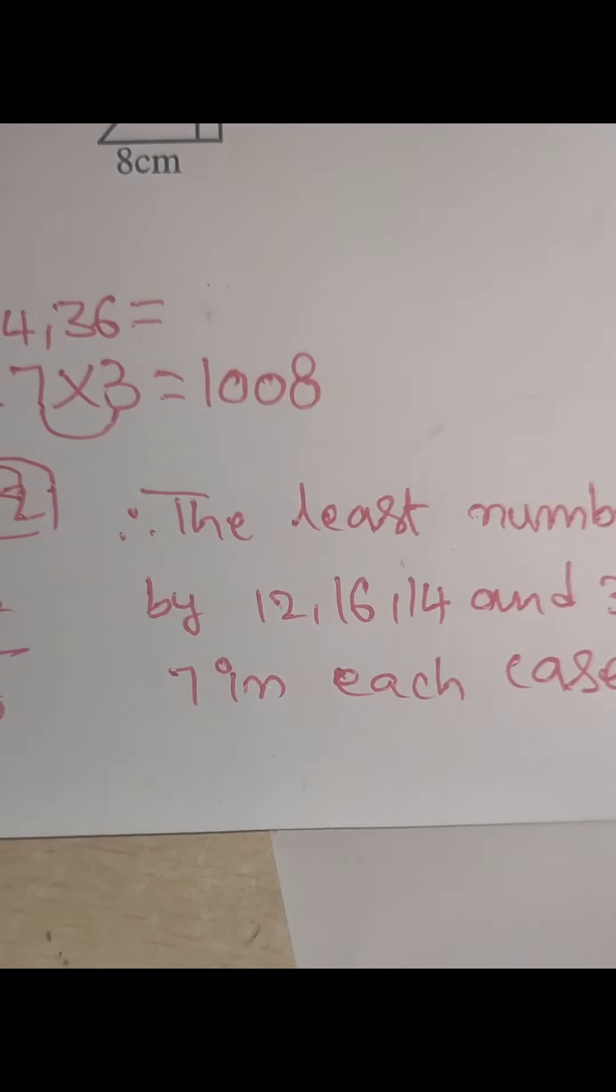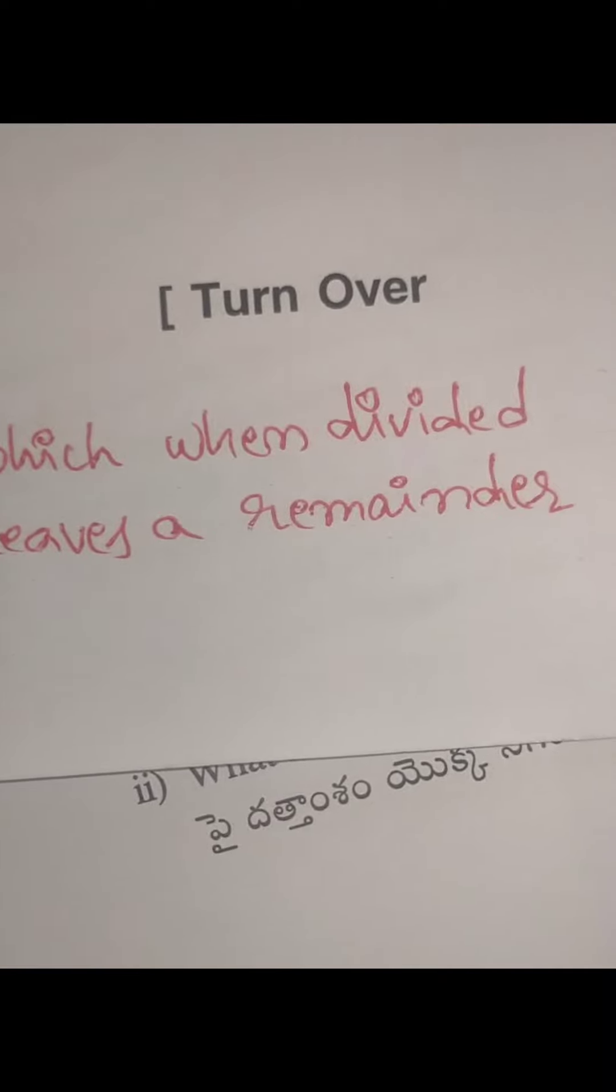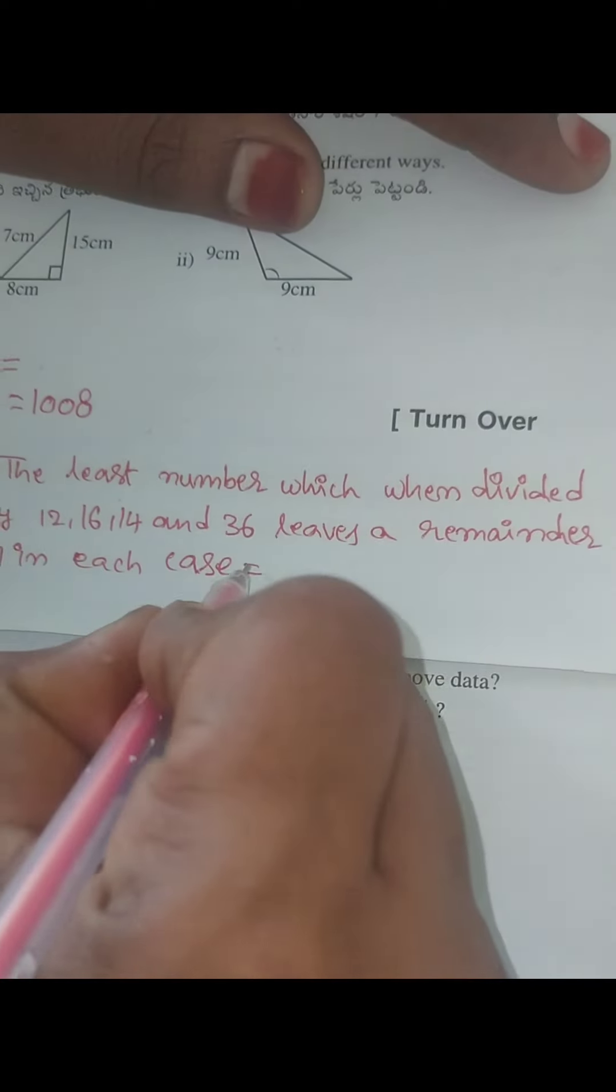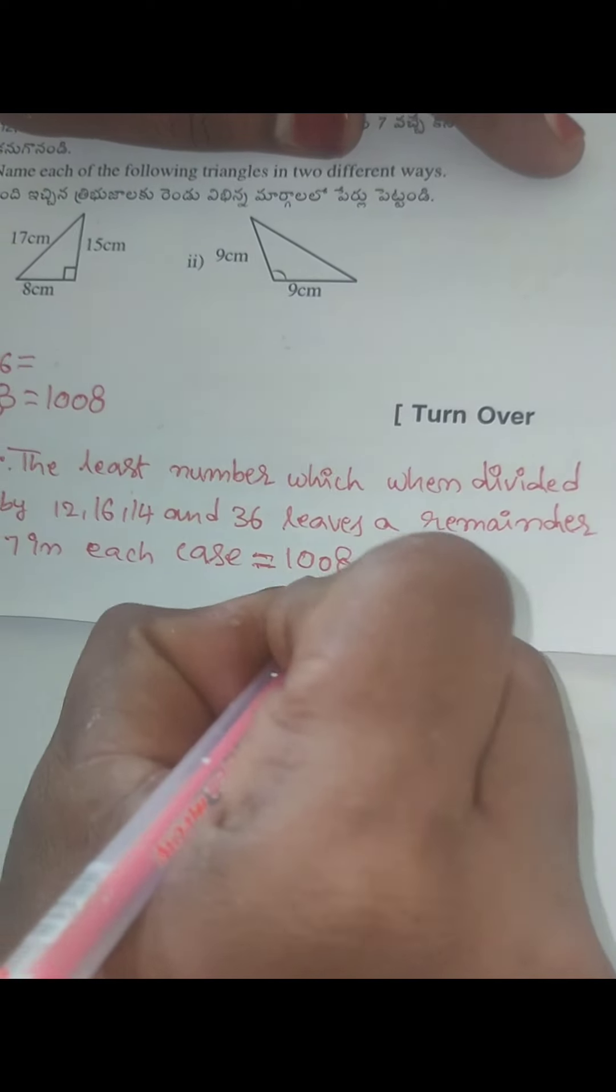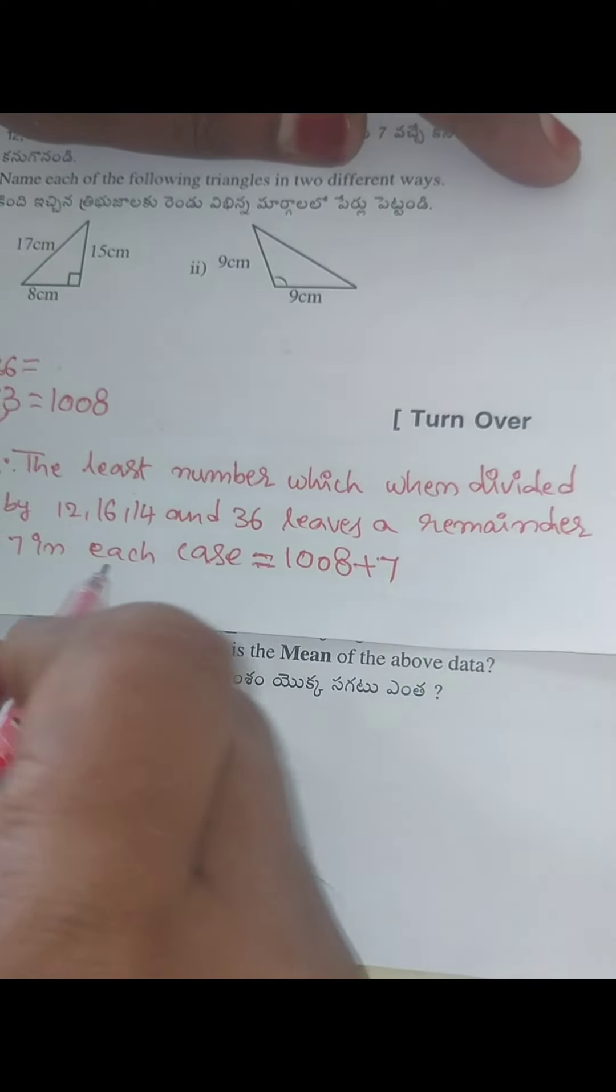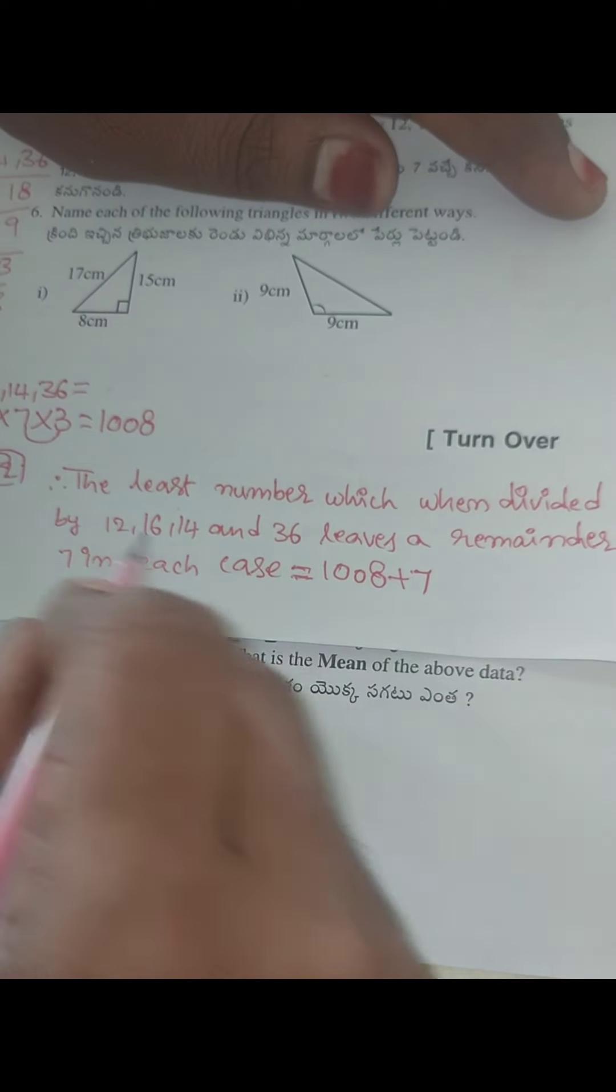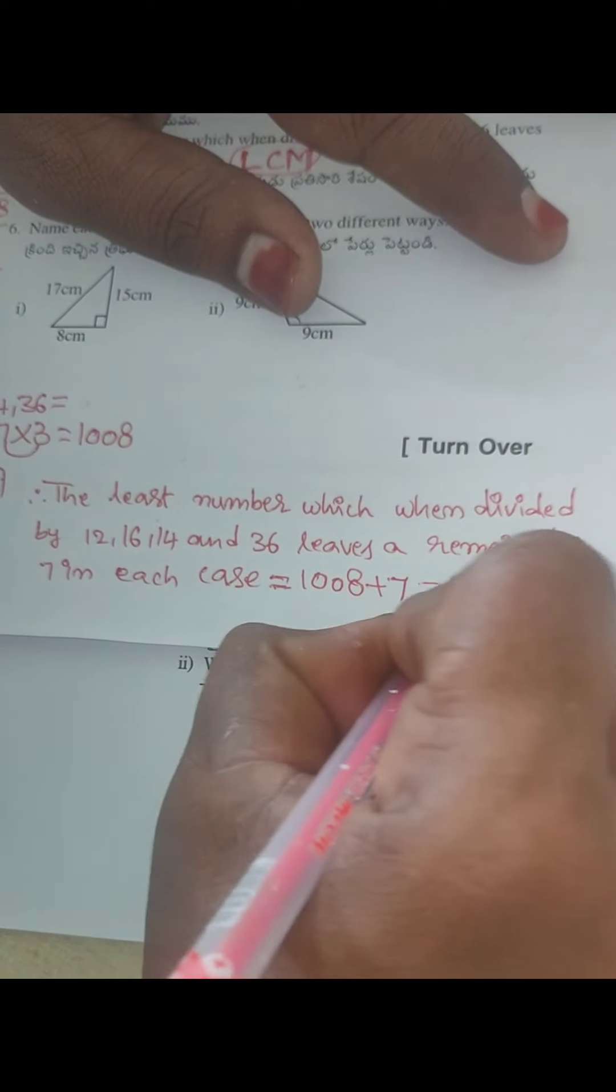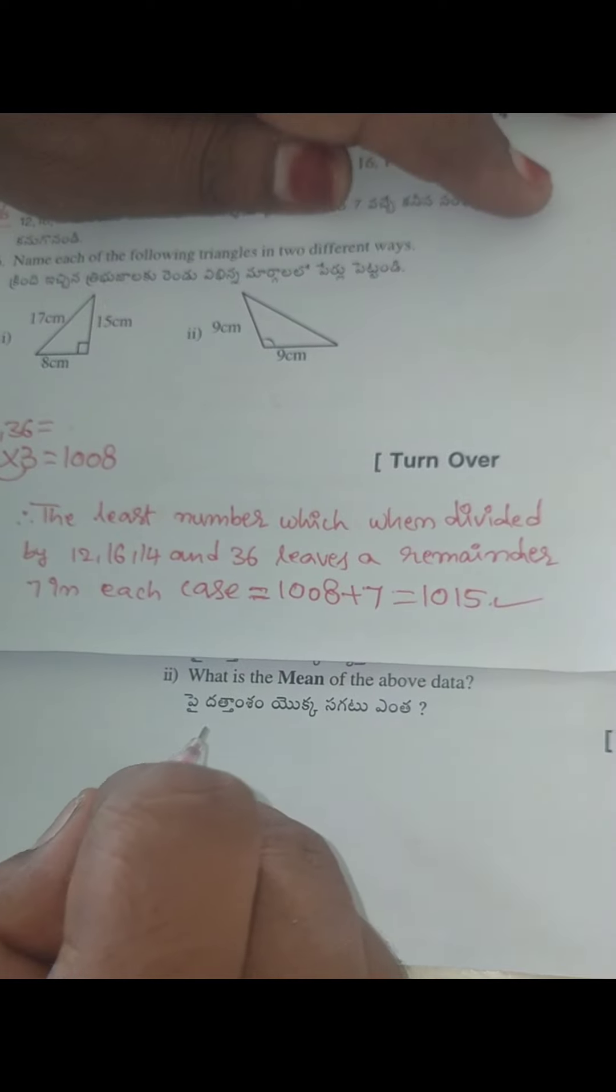Therefore, the least number which when divided by twelve, sixteen, fourteen, and thirty-six leaves a remainder seven in each case equals one thousand eight plus seven. Here, they given leaves a reminder, so we have to add seven to the given LCM. So one thousand eight plus seven is equal to one thousand fifteen is the required number.